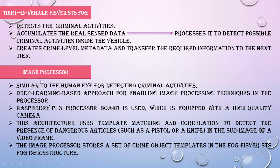Tier one in the vehicle environment first detects whether any criminal activity has occurred. Once detected, it communicates to the police agent. It takes all real-time data sensed by sensors inside the vehicle, and that sensed data is processed so that the detection of criminal activities can be found. Tier one creates metadata, and that data is transferred to the next tier to help the Crime Assist unit identify the crime activity.